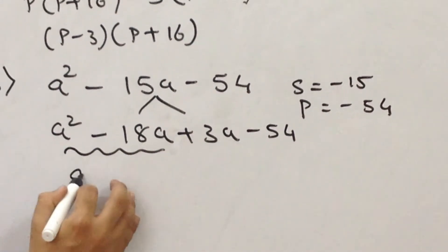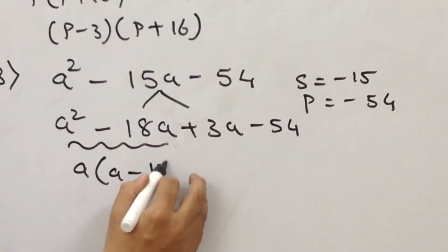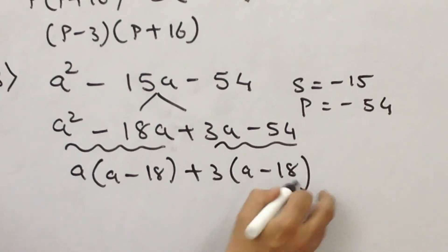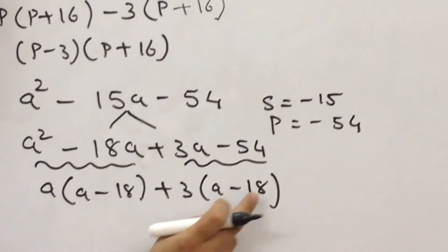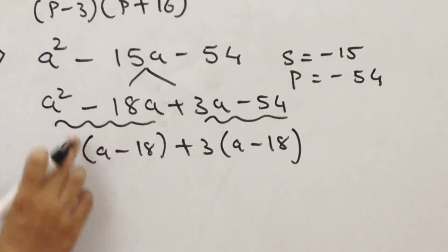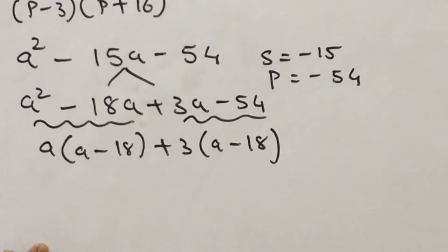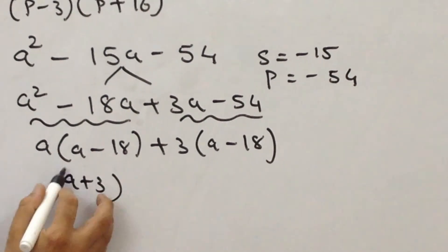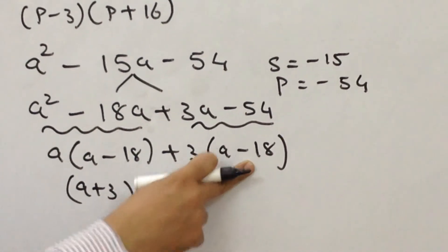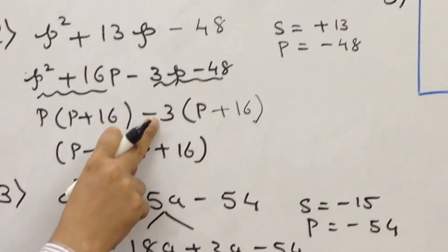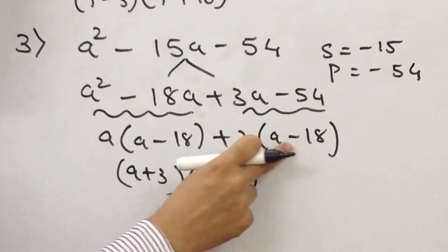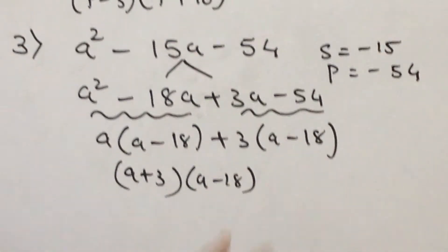Removing common factors: a into a minus 18, then 3 into a minus 18. Always cross-check: 3 into a is 3a, a into a is a squared, a into minus 18 is minus 18a. The answer is a plus 3 into a minus 18. You must be wondering why I didn't change the sign here — because in the second pair, the outside sign was plus, and that's why there is no change in the inner sign.